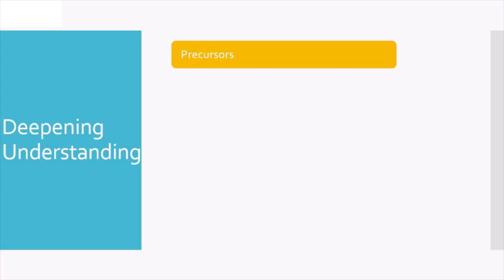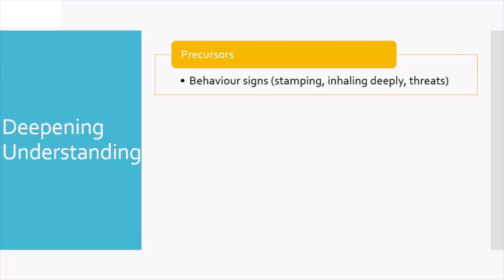Precursors are signs that the behaviour might be about to occur. The best way to think about it is as a micro behaviour of what the challenging behaviour might be, or also as a warning flag — little behaviours that might be a sign that your child is about to behave in a particular way.